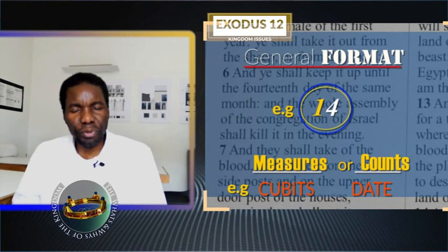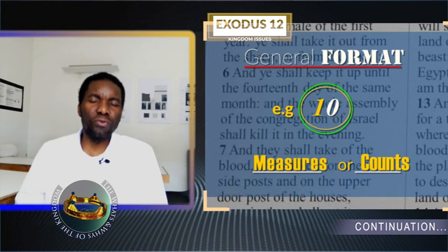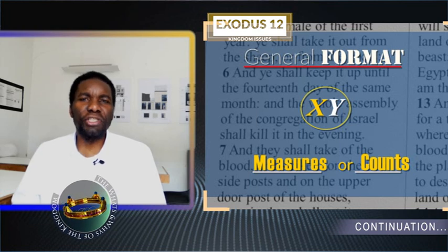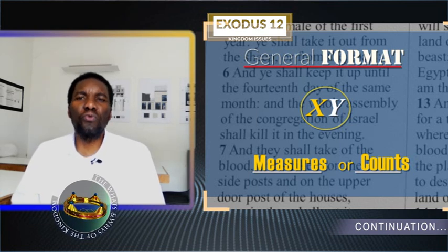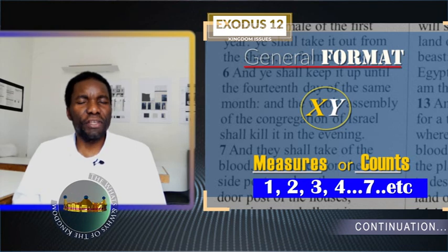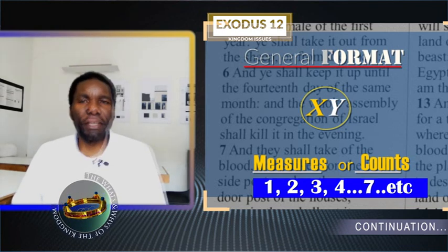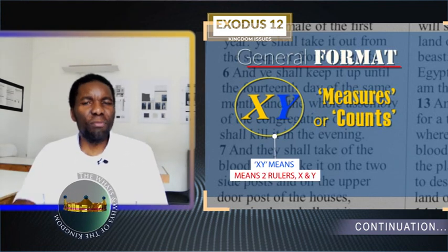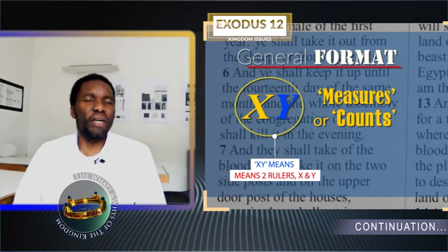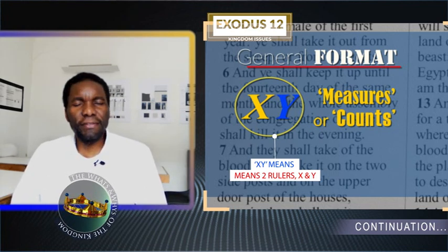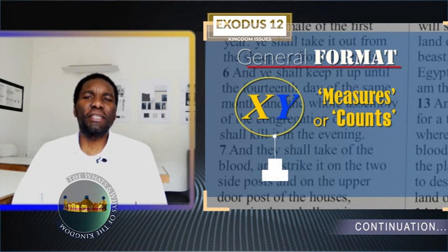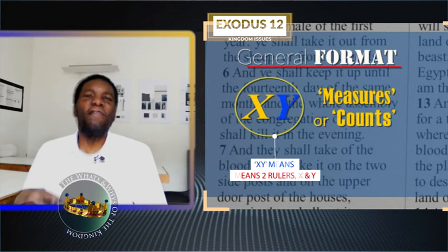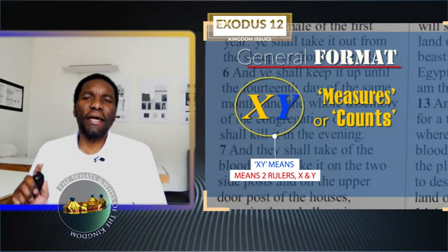Rulers over rulers are in the picture if a measurable count is in double digits. But if it is given in a single digit as a measure count — say one, two, or three and so forth — this means a ruler, but not a ruler over rulers. If this figure of speech appears in scriptures as double digits, these symbolic numbers in this format make rulers over rulers.